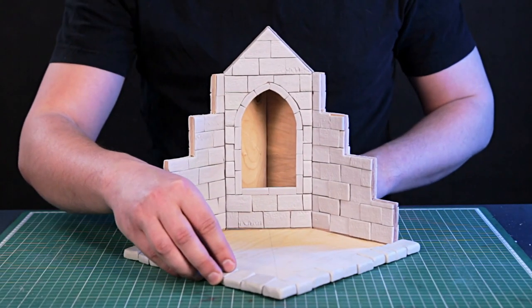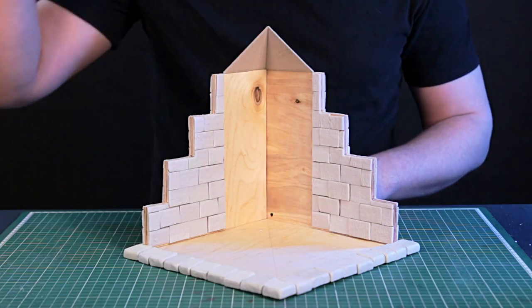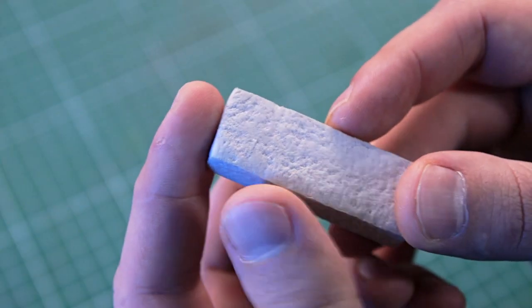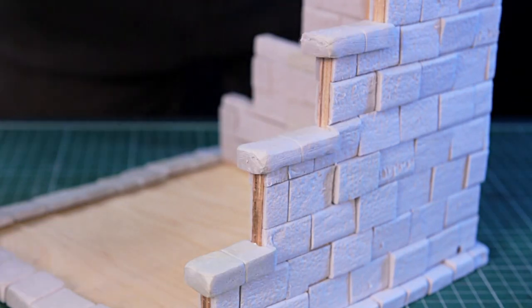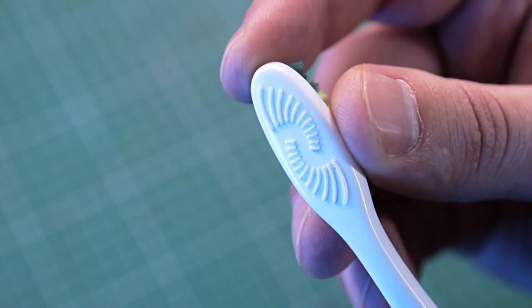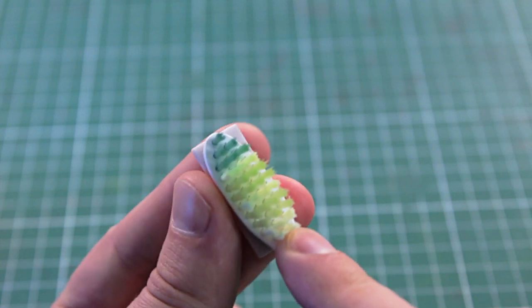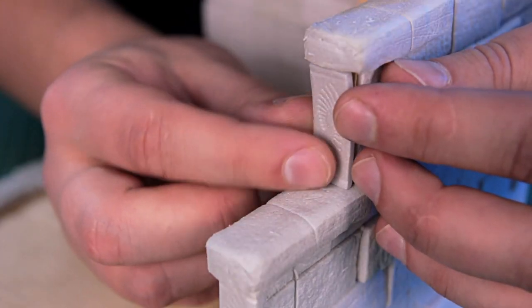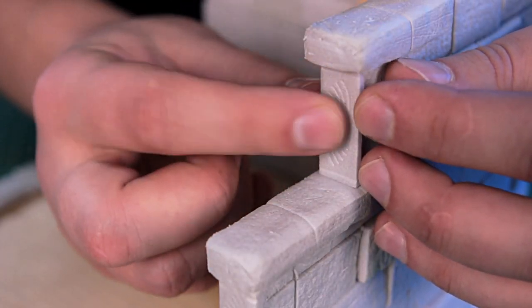When the glue dries, the part with the window can be easily removed. I made these blocks with an edge to cover the top of the wall. I used a toothbrush to make a pattern on the last blocks. It turned out beautifully.